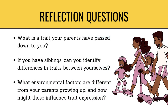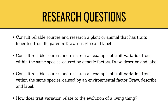Here are some questions related to the topic. 1. What is a trait your parents have passed down to you? 2. If you have siblings, can you identify differences in traits between yourselves? 3. What environmental factors are different from your parents growing up, and how might these influence trait expression? 4. Consult reliable sources and research a plant or animal that has traits inherited from its parents — draw, describe, and label. 5. Research an example of trait variation within the same species caused by genetic factors — draw, describe, and label. 6. Research an example of trait variation within the same species caused by an environmental factor — draw, describe, and label. 7. How does trait variation relate to the evolution of a living thing?